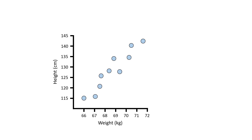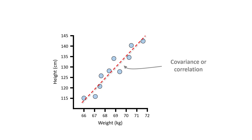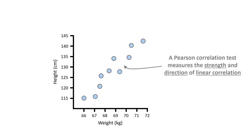If I plot a line of best fit through this data, you can see this relationship more easily. And this relationship between variables in statistics is known as co-variation, or more simply correlation. A Pearson correlation test is used to measure the strength and direction of this linear co-variation.